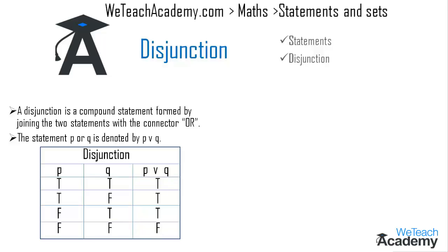Let me explain this concept with an example. Here we have statement P as '3 + 4 = 7' and statement Q as '5 × 4 = 21'. We observe that P is a true statement and Q is false, since 5 × 4 is 20, not 21. So the truth value for the disjunction P or Q is a true statement.